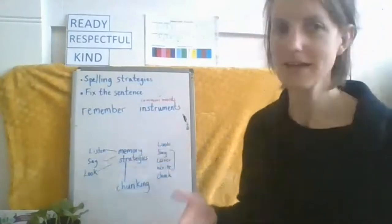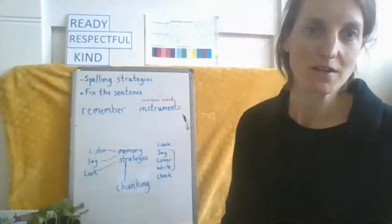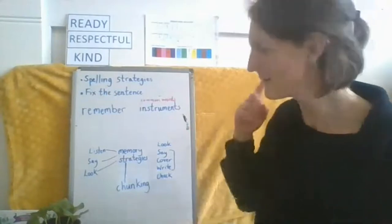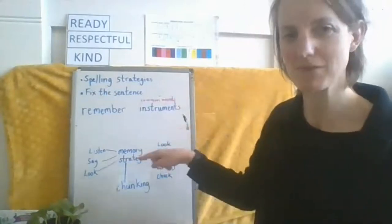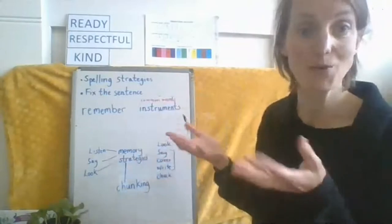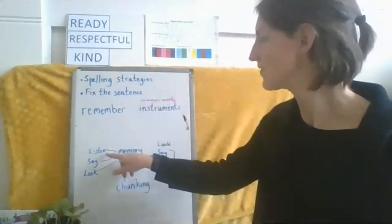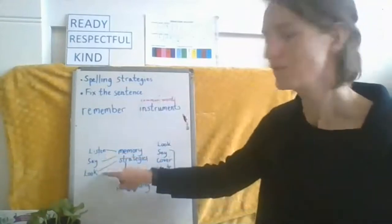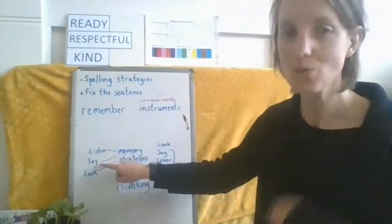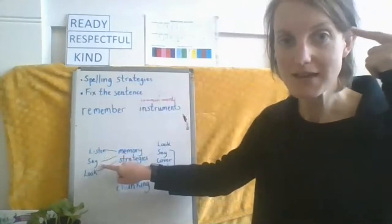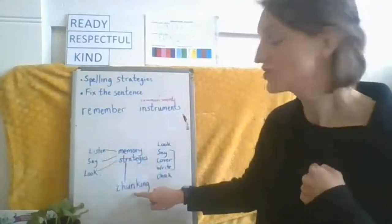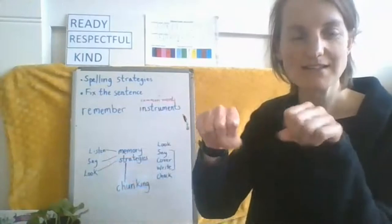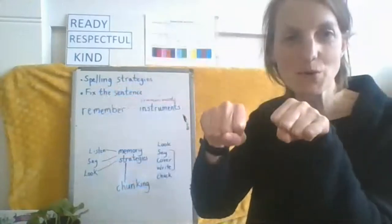So how can we remember how to spell a word? I bet you've got lots of ideas and some of you might be looking here already to memory strategies and the ones that we've done before in previous videos. So here we've got listen, really carefully at the beginning, so when you hear the word. Look, really looking carefully at the word. Saying the word over and over so it makes a strong pathway in your brain. And chunking is what we did last week. So taking a word and making it into smaller blocks. Taking something complicated and making it into smaller pieces.